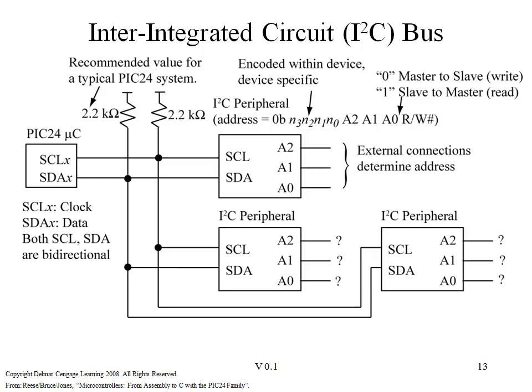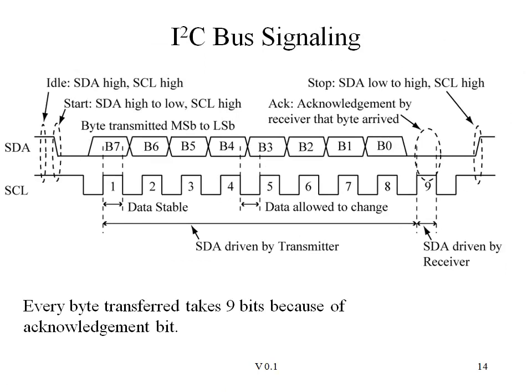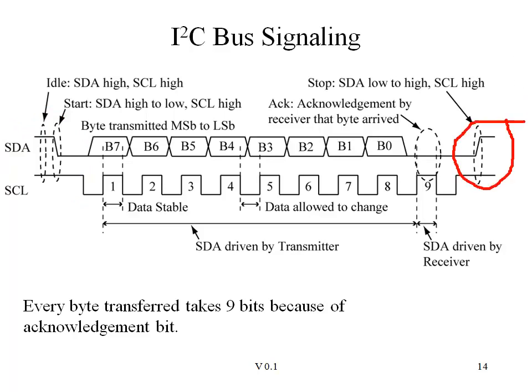In a given I2C transaction, a byte is exchanged in the following fashion. At the beginning of each transaction, a start signal occurs. This is when the SDA line falls low while the clock is high. Otherwise, the SDA line does not transition while the clock is high. Likewise, the special condition of a low-to-high transition on SDA when the clock is high signals the termination, or stop, of an entire I2C bus transaction.